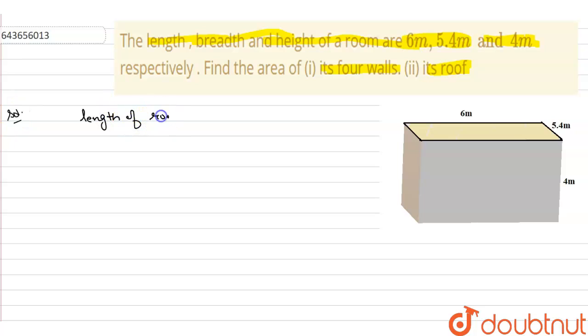Length of room is 6 meter. Breadth of room is 5.4 meter, and height of room is 4 meter.